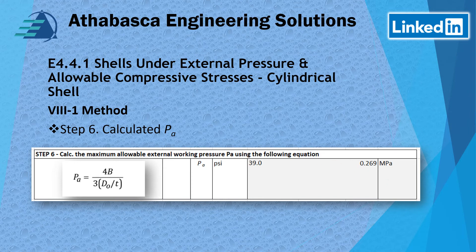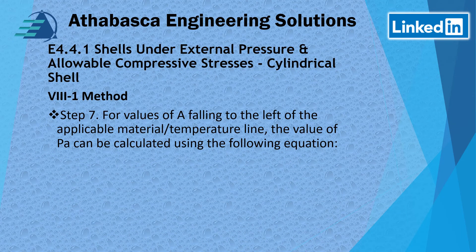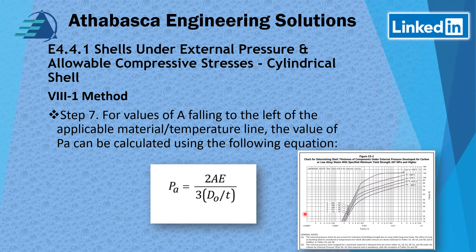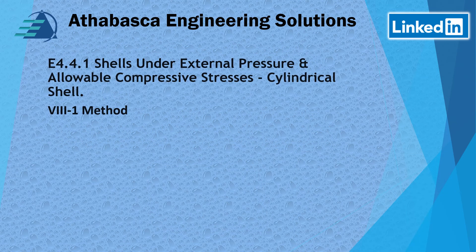We also have the metric version. Step 7 applies to cases where your Factor A value falls to the left of the CS-2 curve — in that case you use the A value directly with a different equation. However, in our example we don't fall in that region, so Step 7 is not applicable.